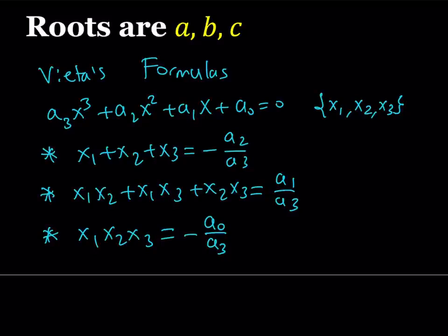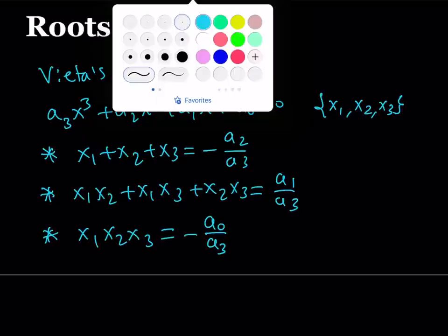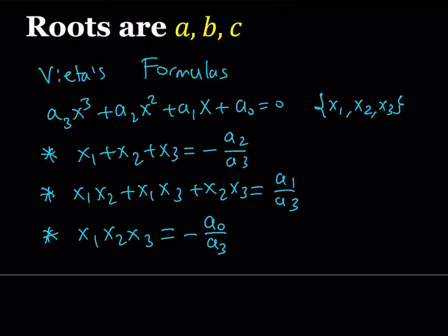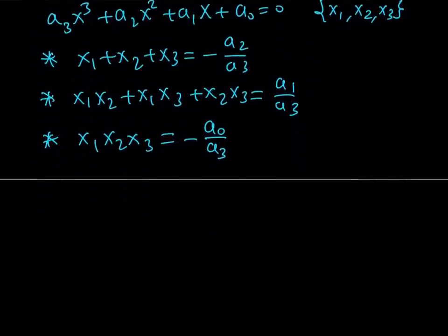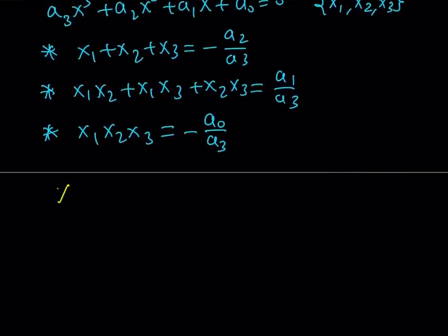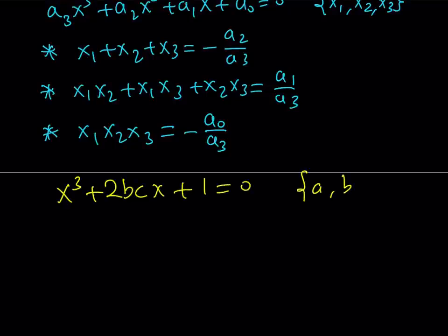Notice that the signs alternate starting with the negative sign for the sum of the roots, and this is true for all degrees of polynomial equations. So for our problem, here's our equation one more time: x cubed plus 2bcx plus 1 equals 0, and we're given that the roots are a, b, and c.